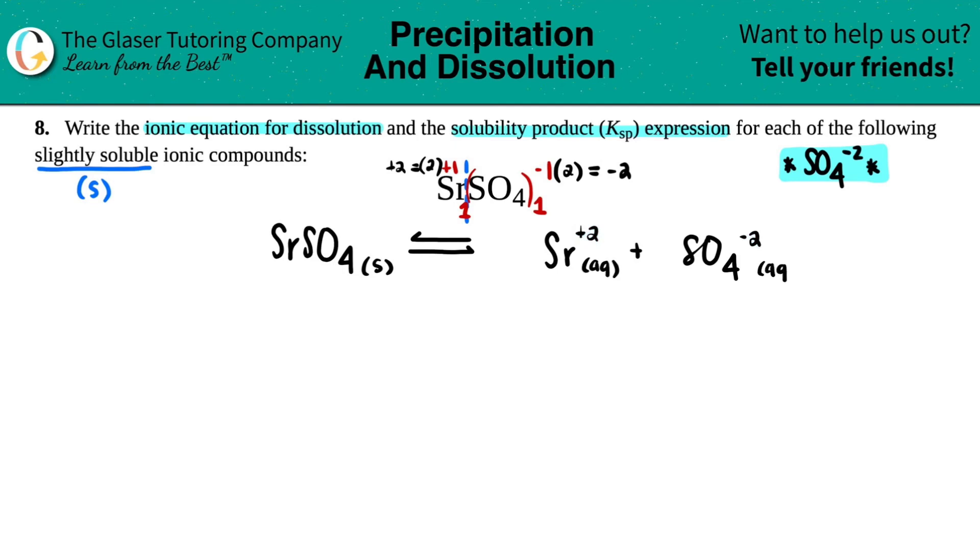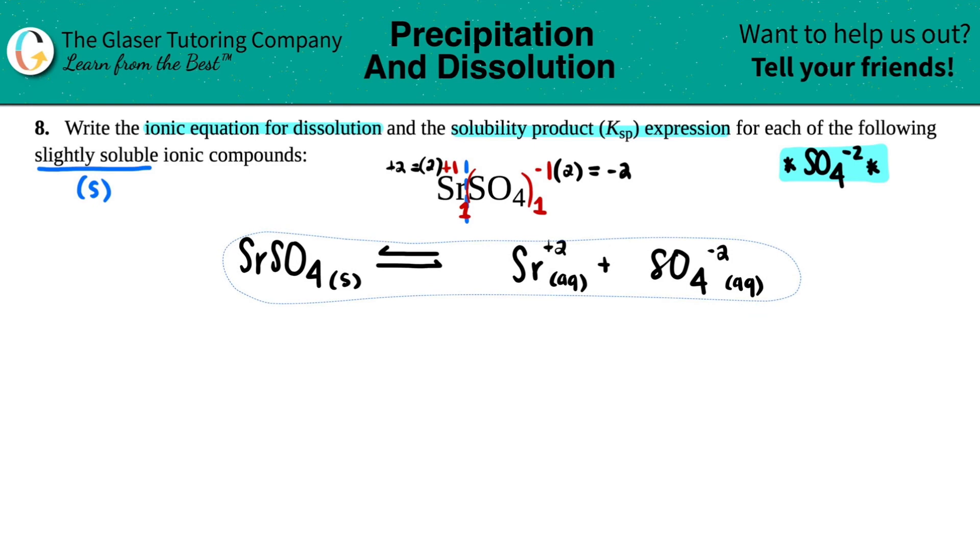And once after we do this, just make sure, is this equation balanced? Maybe I'll just pull this a little bit down here. Is this equation balanced? Yes, it is. I only had one strontium on the left side, one strontium. And then I have one sulfate. So one sulfate, so we're good. So this is your ionic equation for dissolution.